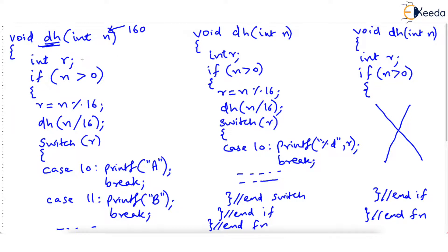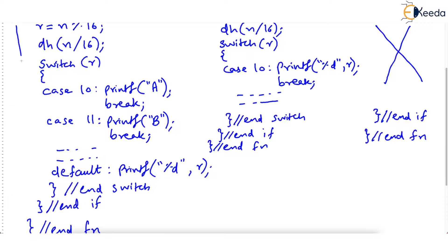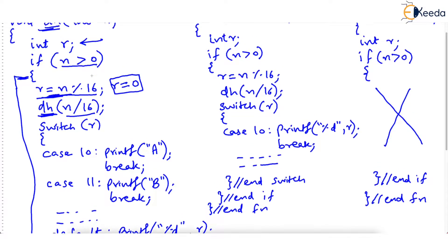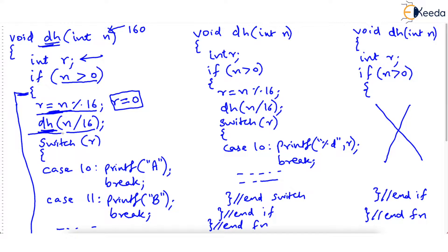When you run this code, there is a local variable R declared. The function checks if 160 is greater than 0, which is true — so the entire if block will run. R is recorded as 160 percent 16, which is obviously 0, since 16 tens of 160 leave a remainder of 0. Now, dec_to_hex is called recursively with the value N divided by 16 — that is, 160 divided by 16, which is 10. The same function dec_to_hex is getting called from this line, so here is the new occurrence of the function. Dec_to_hex has been called again with the parameter N as 10.